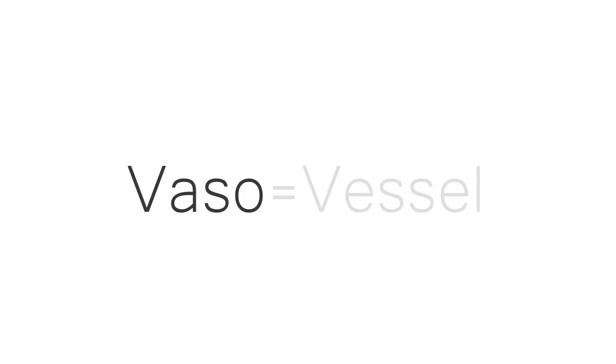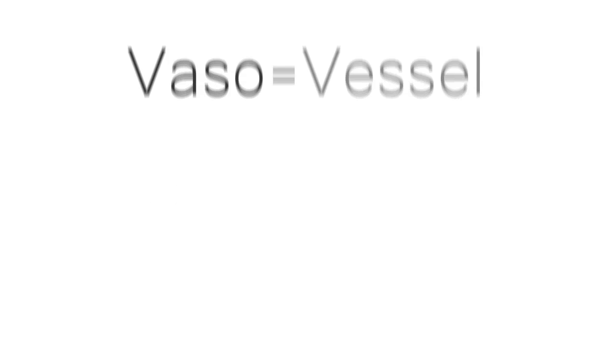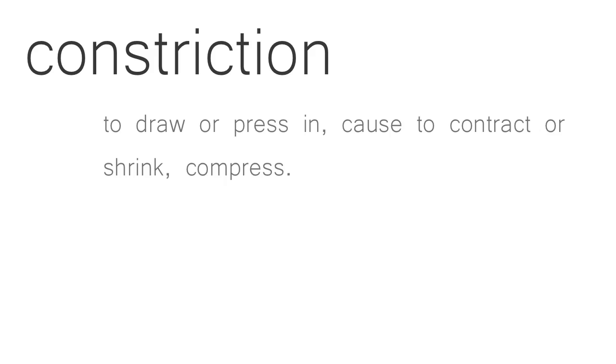Vasoconstriction for dummies. Let's look at the word vasoconstriction. If we get rid of the constriction, we get the word vaso. Vaso basically means vessel — in this case, it refers to a blood vessel. The word constriction means to draw or press in, to cause to contract or shrink, or to compress. Therefore, the word vasoconstriction means when blood vessels constrict or get smaller.